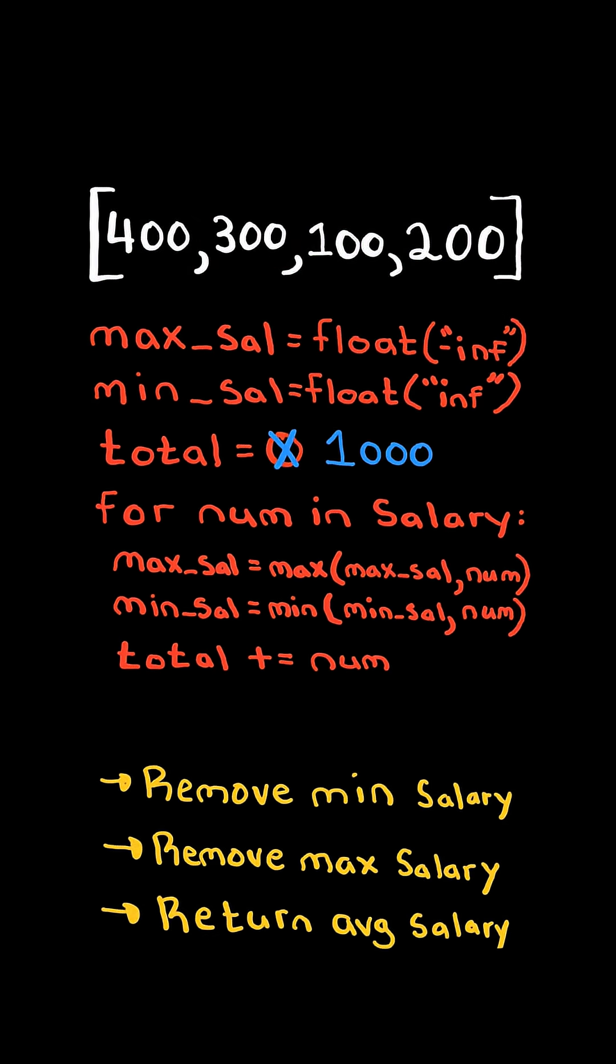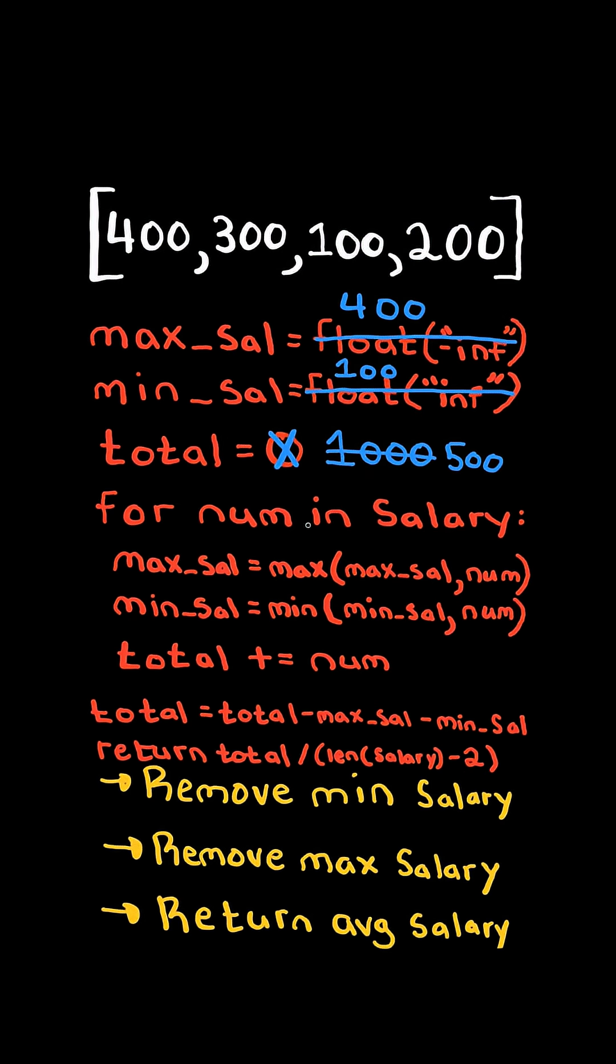At the end, total will have accumulated all the salary and max sal will store the maximum and min sal will store the minimum. We then subtract the minimum and maximum from the total and return the average.